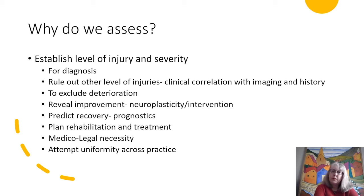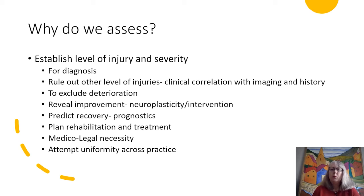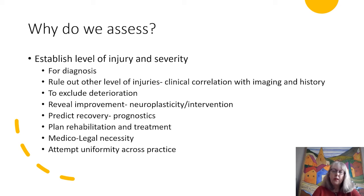So why do we assess? We're looking to establish the level and severity of the injury. This allows us to get the correct diagnosis, plan the correct immediate treatment, rule out other levels of injury, and use the combination of clinical correlation with imaging and history to make sense of the presentation. We need to review and check there's been no deterioration, but we're also looking to see over the future whether there has been improvement either from natural neuroplasticity or from any intervention. We're looking to predict recovery using the prognostics afforded by this examination, and some form of documentation is a medical legal necessity.